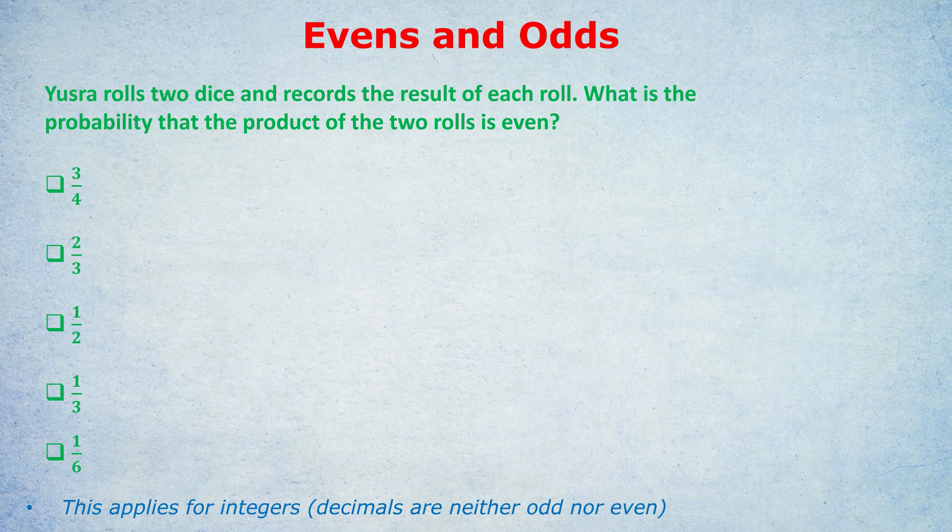Here's a classic evens and odds question. Yuzuru rolls two dice and records the result of each roll. What is the probability that the product of the two rolls is even? Remember, product means multiplying the two results.